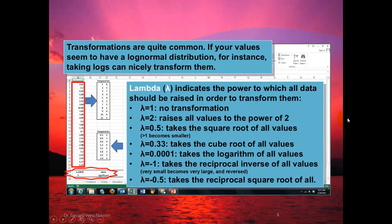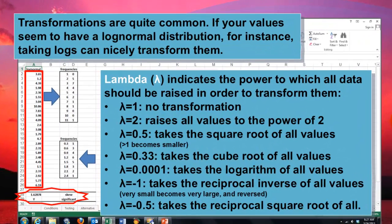The log-normal one is an easy one. But more in general, you could say that you have to raise your data to a certain power. And you use the lambda variable to do that. If lambda is 1, there is no transformation. If it's 2, it raises all values to the power of 2. 0.5 takes the square root of all values. 0.33 takes the cube root. A very small number, close to 0, takes the logarithm of all values.